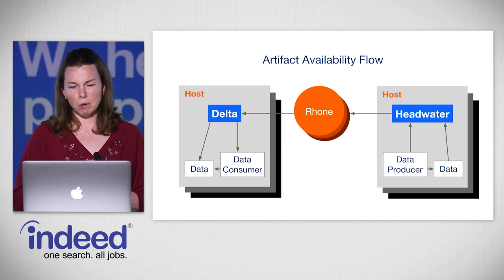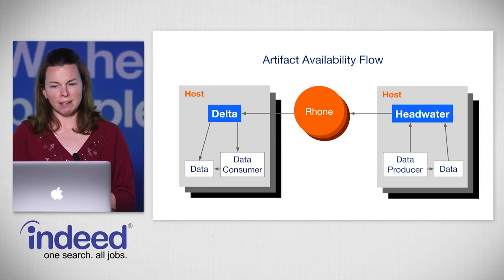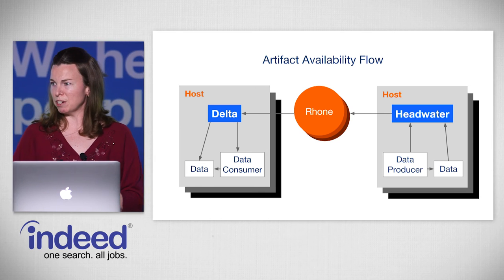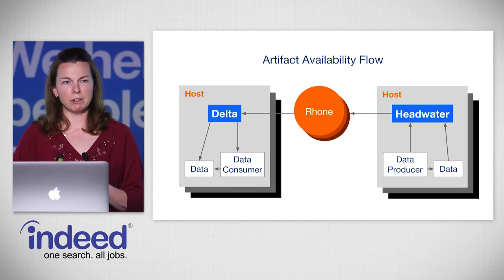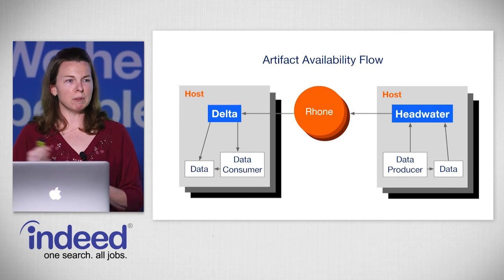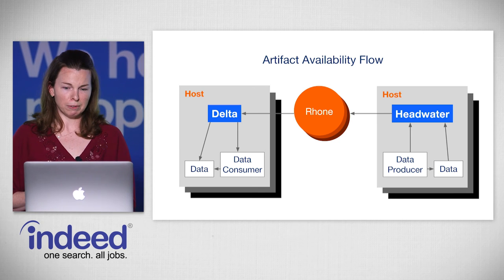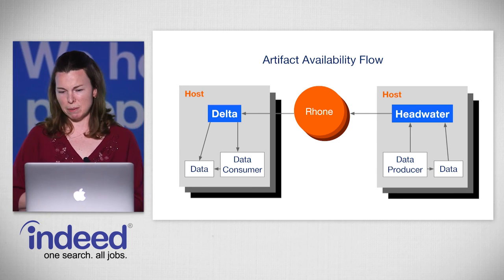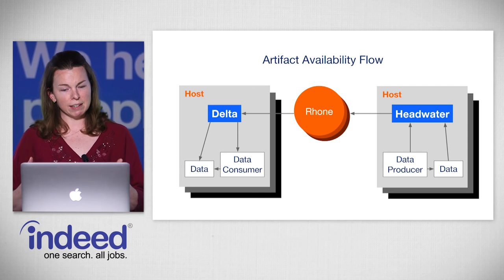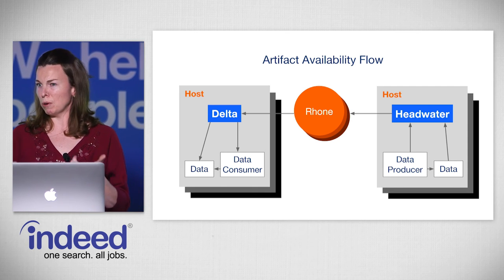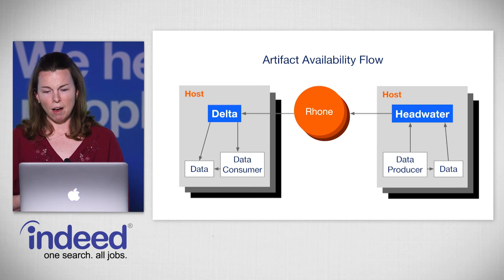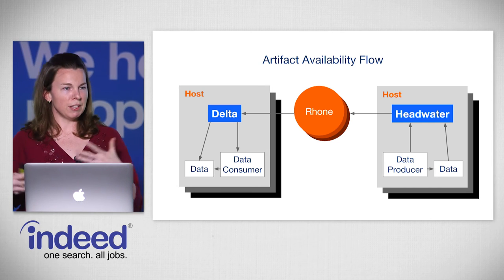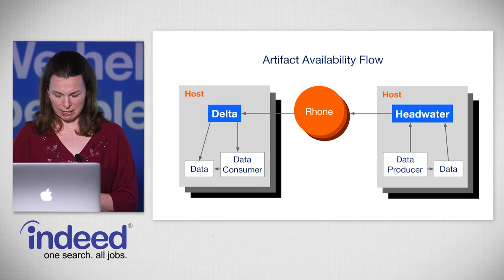With these three services — the headwater, the Rhone, and the delta — we can keep multiple ordered versions of artifacts available in our production infrastructure, downloadable to any machine that can communicate with Rhone. This can all happen without any intervention from our systems administrators, and the data consumer and data producer remain separate and independent deployables to increase development team velocity.